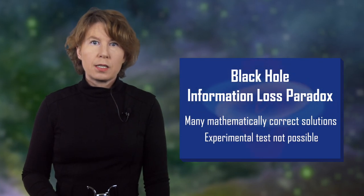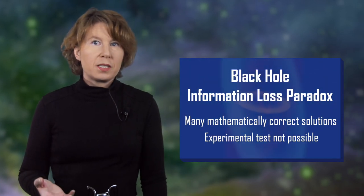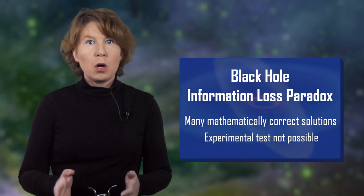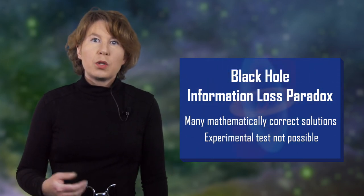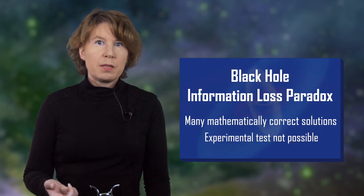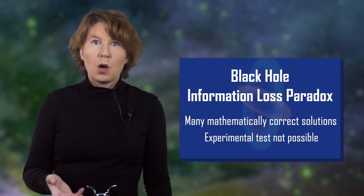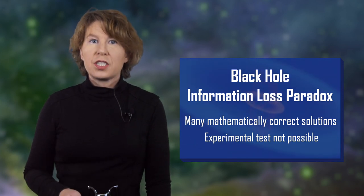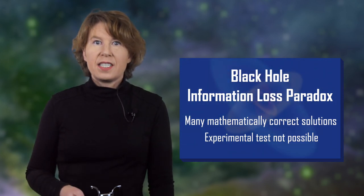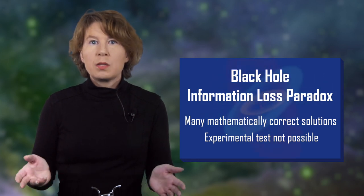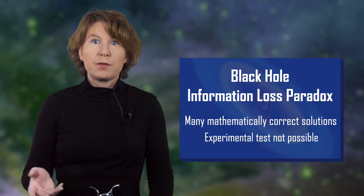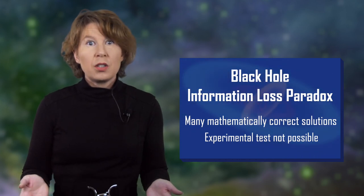Physics isn't maths. Mathematics is a great tool, but in the end you have to make an actual measurement to see what happens in reality. And that's the problem with the black hole information loss paradox. The temperature of the black holes that we can observe today is way too small to measure the Hawking radiation. Remember that the larger the black hole, the smaller its temperature. The temperature of astrophysical black holes is below the temperature of the CMB. And even if that wasn't the case, what do you want to do — sit around one hundred billion years to catch all the radiation and see if you can figure out what fell into the black hole? It's not going to happen.